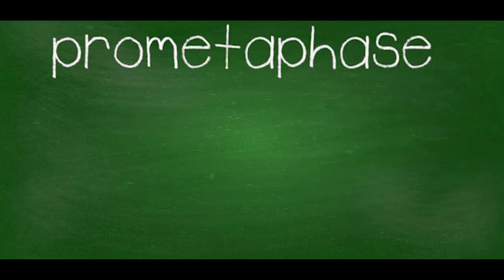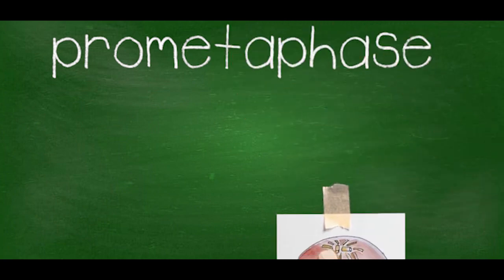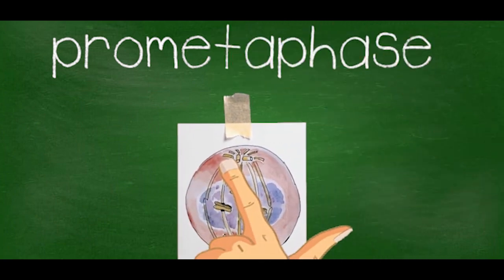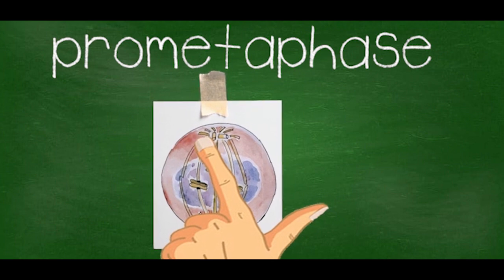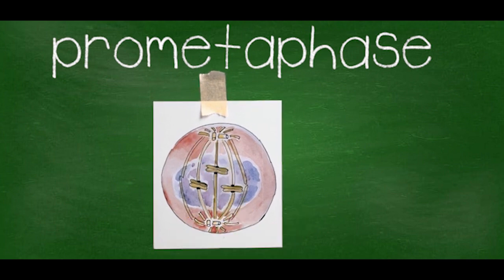Prometaphase: the nuclear envelope fragments and chromosomes condense more. Microtubules get attached to the kinetochore. Non-kinetochore microtubules from opposite poles interact with each other.